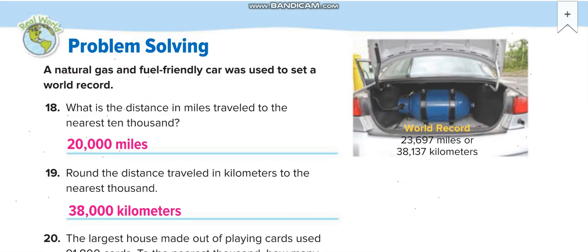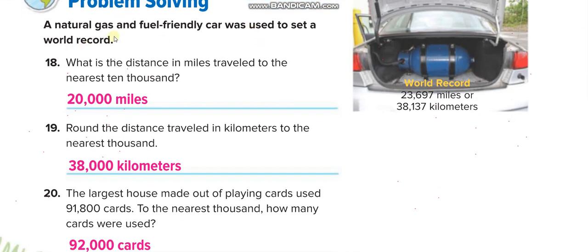Here is a word problem: a natural gas fuel-friendly car was used to set a world record. What is the distance in miles traveled, rounded to the nearest ten thousand? The ten-thousands place: ones, tens, hundreds, thousands, ten thousands. The next digit is 3, which is less than 5, so the 2 stays the same and remaining digits become zero. The answer is twenty thousand miles.